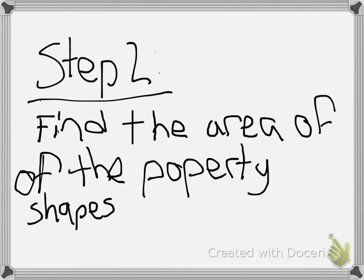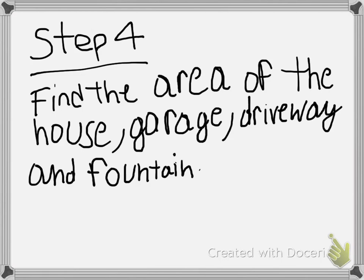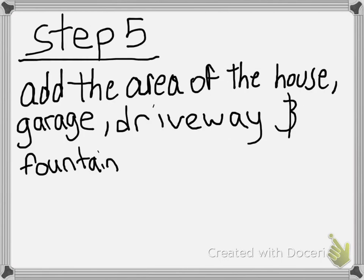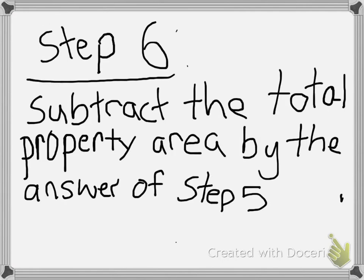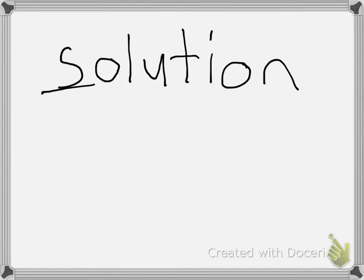Step 3: Add the areas of the property shapes. Step 4: Find the area of the house, garage, driveway, and fountain. Step 5: Add the areas of the house, garage, driveway, and fountain. Step 6: Subtract the answer from step 5 from the total property area. Finally, step 7: Find out the amount of grass sod needed. Now we'll be showing you the solution. The second S in GRASS stands for solution, or how you would go about solving the steps.